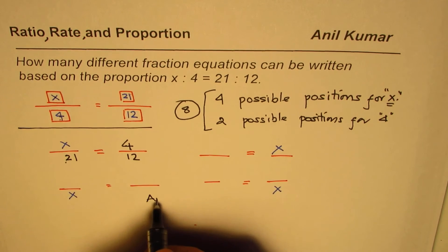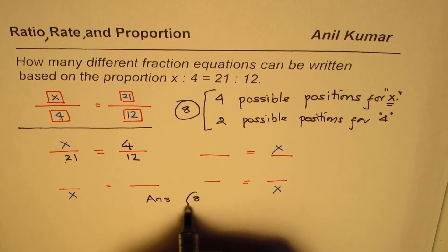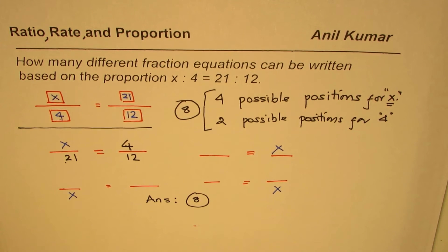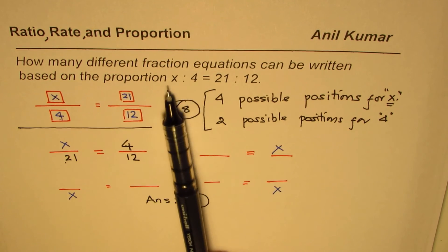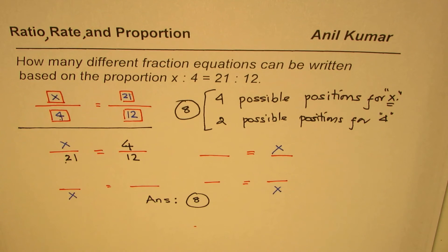So the number of choices or ways in which we can do is 8. So our answer is 8. So that is our answer. So what you can do as an exercise is write all possible fractions in which you can represent this proportion. And see if 8 works or can you get more.